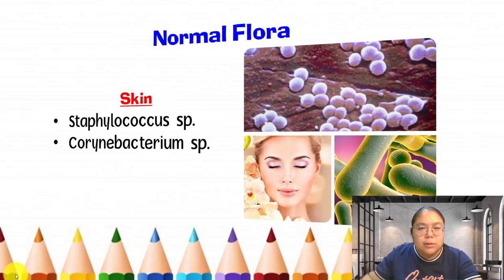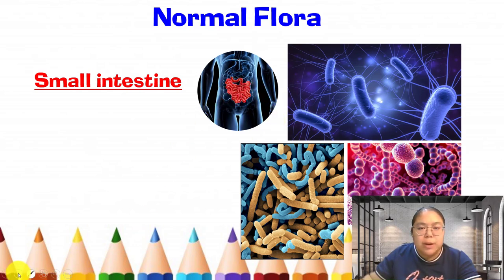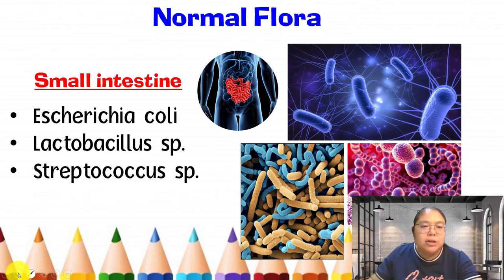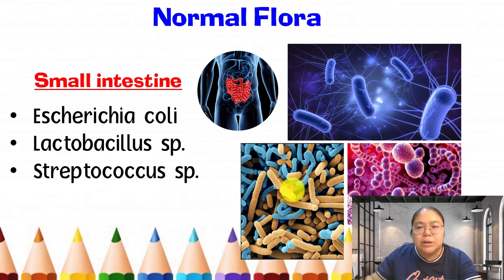Then we go to another part: the small intestine. You can see the diagram. The microorganisms in the small intestine include Escherichia coli, Lactobacillus species, and Streptococcus species. From here you can see the different shapes of these microorganisms.